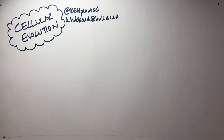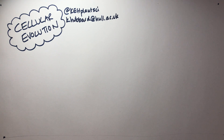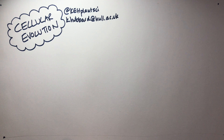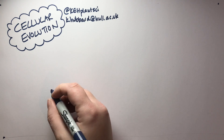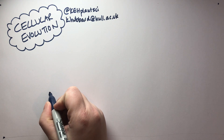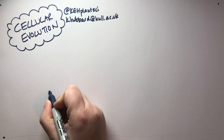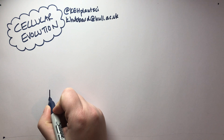In this video we're going to be thinking about the evolution of cells — what are cells and more importantly where did they come from? If we're going to think about any evolutionary problem, we first of all need some sort of evolutionary or phylogenetic tree, so the tree of life looks like this.